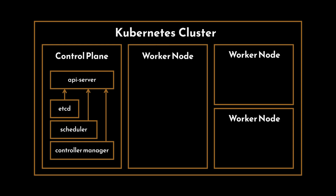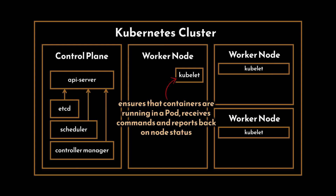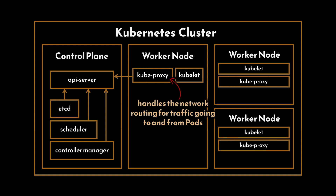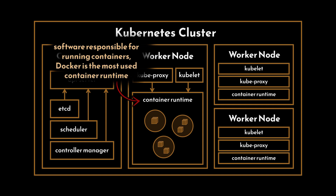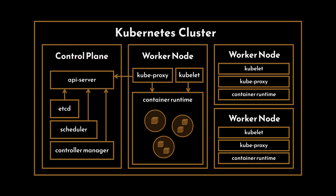Kubernetes nodes, also known as worker nodes, are the machines where actual workloads run. Each node has the necessary services to run pods and is managed by the master. Key components on a node include: the kubelet, an agent that runs on each node ensuring containers are running in a pod and communicating with the master to receive commands and report node status; the kube-proxy, which maintains network rules on nodes and handles network routing for traffic going to and from pods, ensuring communication within the cluster and from external sources is managed efficiently; and the container runtime, the software responsible for running containers — Docker is the most commonly used, but Kubernetes also supports other runtimes such as containerd and CRI-O.